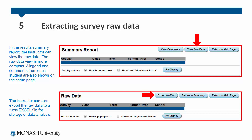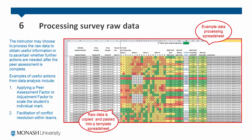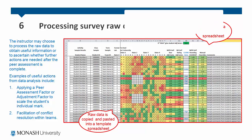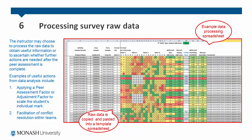The instructor can export the raw data to an Excel file for storage or data analysis. The instructor may choose to process the raw data to obtain useful information or to see whether further actions are needed after the peer assessment is complete. Examples of useful actions from data analysis may include applying a peer assessment factor or adjustment factor to scale the student's individual mark, or the facilitation of conflict resolution within teams. This is an example of a data processing spreadsheet, where raw data is copied and pasted into a template spreadsheet — this is useful as it condenses CATME's raw data into an easily readable format.